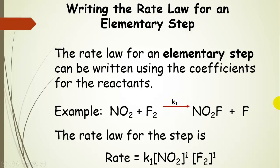We can write the rate law simply as rate equals - there's our rate constant, the specific rate constant for the step - and then nitrogen dioxide to the first power because there's an assumed one coefficient.